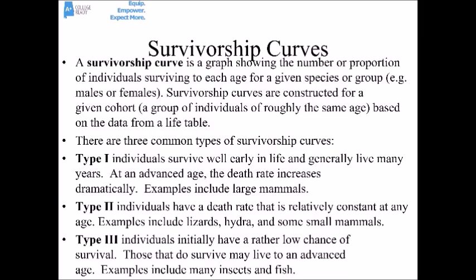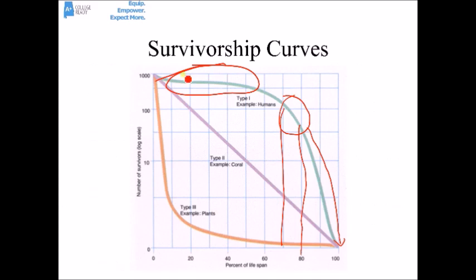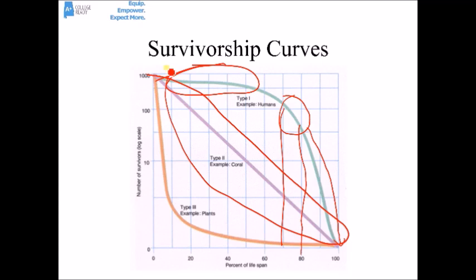In a type 2 survivorship curve, individuals have a death rate that's relatively constant throughout their whole life expectancy. These kinds of curves are exhibited by lizards, the hydra, some small mammals, and also some birds. The mortality rate is essentially constant throughout — we've got a straight line with a constant slope. There's not a lot of parental care at the beginning, so there are some deaths early in life, and the death rate continues constant all the way to the end of the life expectancy.